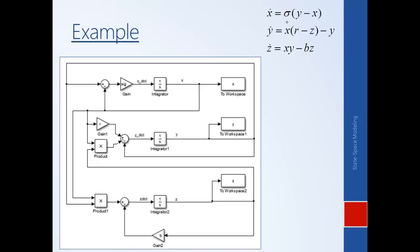Looking at the first equation: X-dot is Sigma times the quantity (Y minus X). Here's Sigma, this is Y, this is X — you subtract X from Y and multiply by Sigma to get X-dot. Integrate once to get X. The Y value fed in here comes from the equation for Y-dot below.